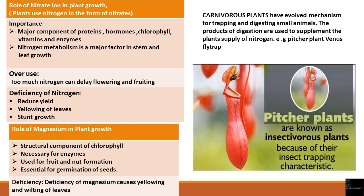Magnesium is a structural component of chlorophyll. It is necessary for enzyme activity and is also used for fruit and nut formation. It is very essential for the germination of seeds, but its deficiency can cause yellowing and wilting of leaves.